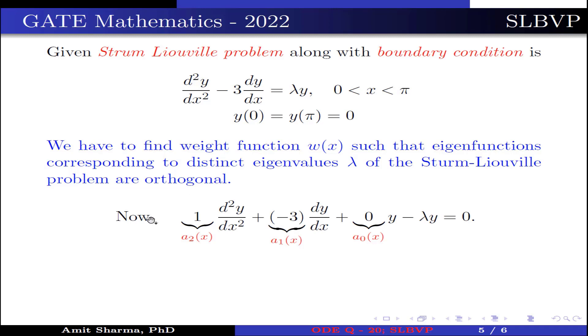Now the differential equation is 1·d²y/dx², where 1 is a₂(x), plus (-3)·dy/dx, where -3 is a₁(x), plus 0·y, where 0 is a₀(x), minus λy = 0.